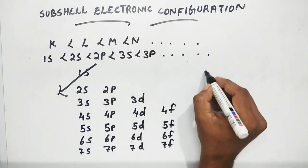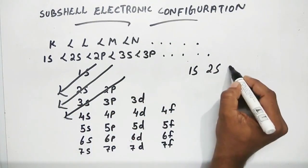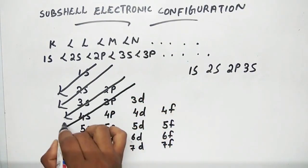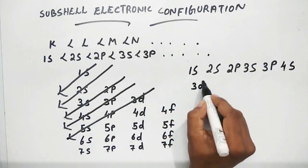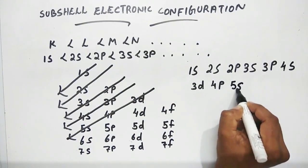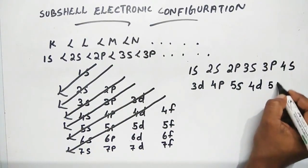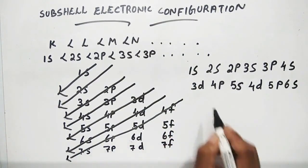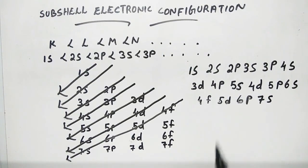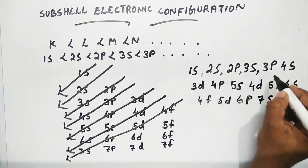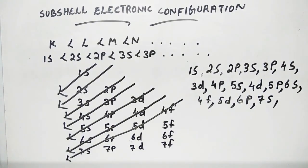The first electron fills 1s, which has the least energy. Then 2s, then 2p, then 3s, 3p, then 4s, then 3d, 4p, 5s, 4d, 5p, 6s. The complete order of filling is: 1s, 2s, 2p, 3s, 3p, 4s, 3d, 4p, 5s, 4d, 5p, 6s, 4f, 5d, 6p, 7s — subshells increase in order of energy.